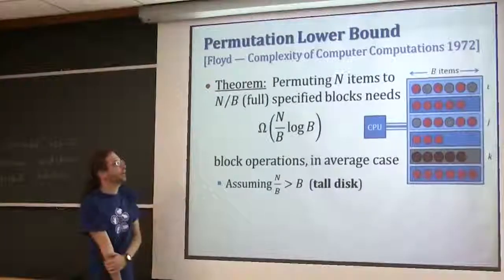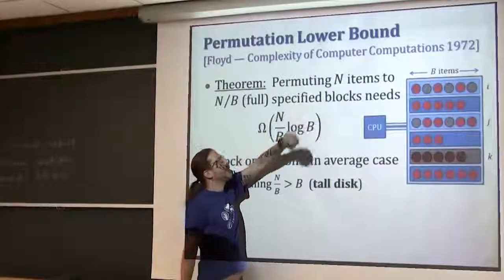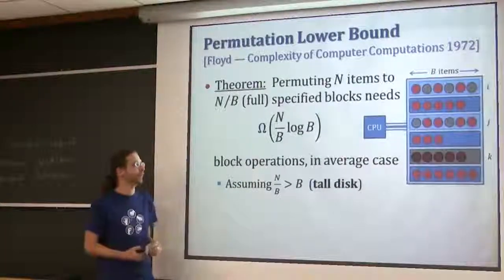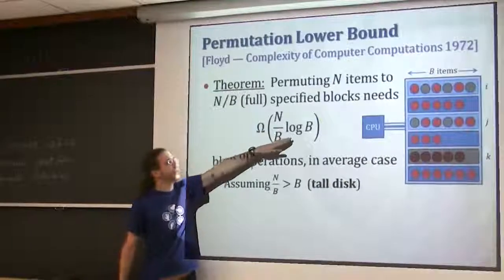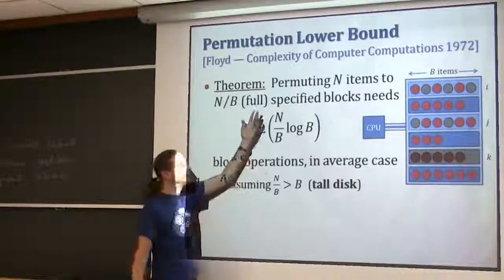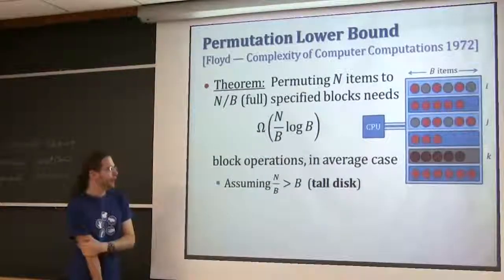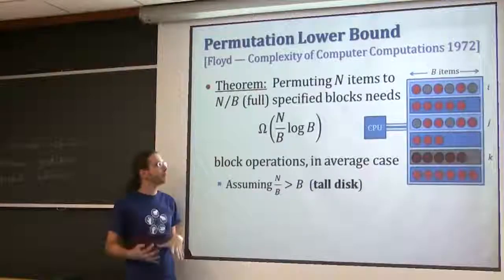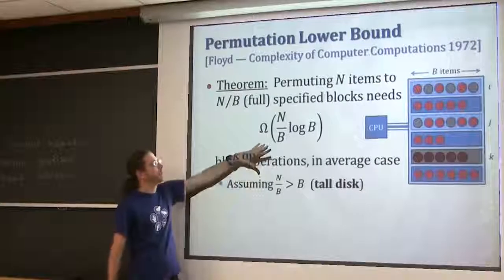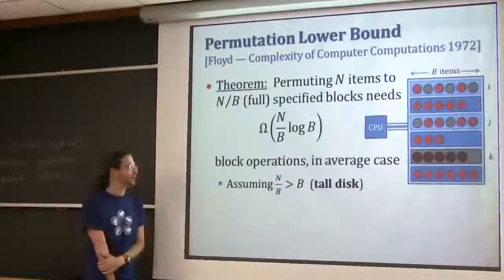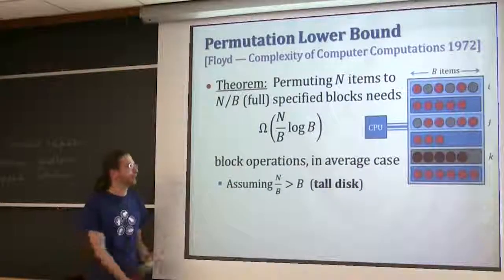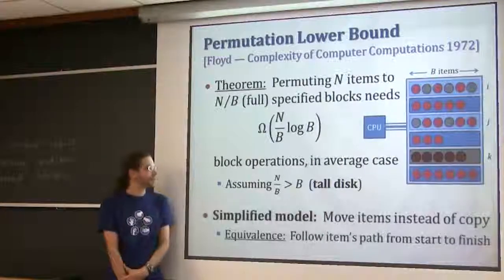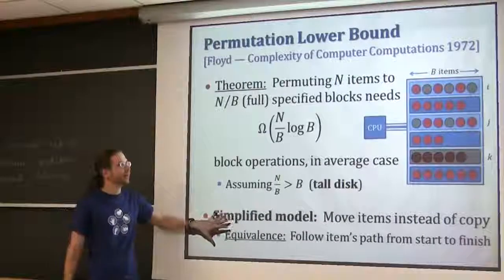Here's the main theorem of that paper. If you're given N items and you want to permute them into N over B blocks - each of those blocks going to be full - then you need to use N over B log B block operations, even for a random permutation on average or with high probability. This is interesting because just to touch those blocks requires N over B block operations, but there's an extra log factor that starts to creep up, which is maybe a little bit surprising.